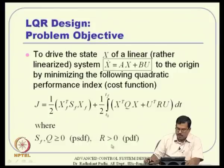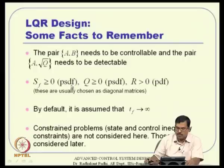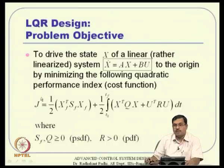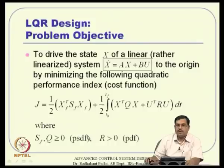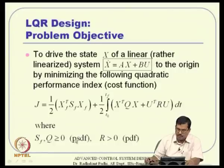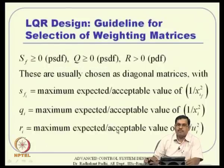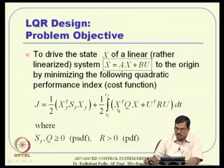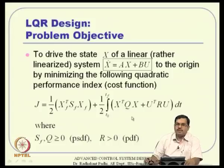The form of the cost function is fixed, but the question is how to select the matrices Sf, Q, and R. These must be positive definite or positive semi-definite, which is not trivial. One popular guideline is Bryson's rule. The idea is that if three terms compete against each other, normalize each term so that each has a fair chance to contribute, avoiding referential bias toward any one term.